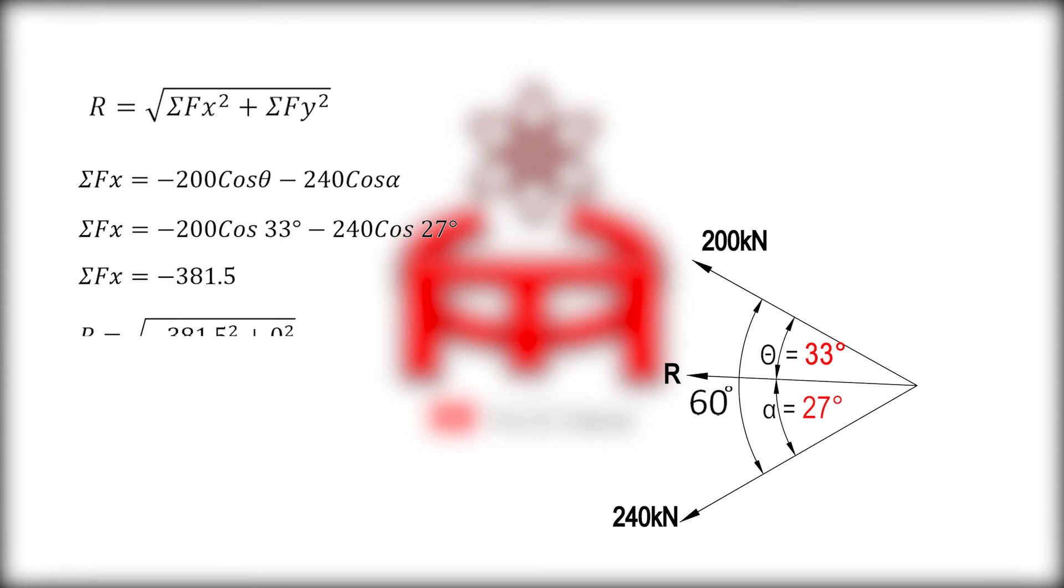For solving the resultant force R using the formula above, R equals the square root of negative 381.5 squared plus zero squared, which equals 381.5 kilonewtons.